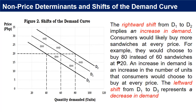The rightward shift from D1 to D2 implies an increase in demand — consumers would likely buy more sandwiches at every price. For example, they would choose to buy 80 instead of 60 sandwiches at 20 pesos. An increase in demand means an increase in the number of units consumers would choose to buy at every price. The leftward shift from D1 to D3 represents a decrease in demand — consumers would choose to buy fewer sandwiches at every price, for example 40 instead of 60 at 20 pesos.